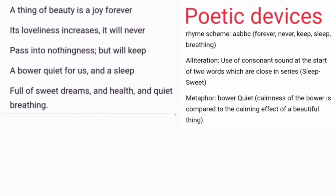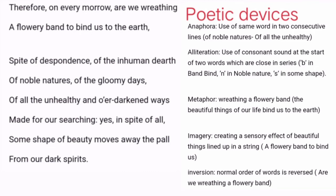Alliteration is the use of a consonant sound at the start of two words which are close in series. For example, the 's' sound is repeated in 'sleep' and 'sweet'. The other poetic device used here is metaphor — 'bower quiet': the calmness of the bower is compared to the soothing effect of a beautiful thing.